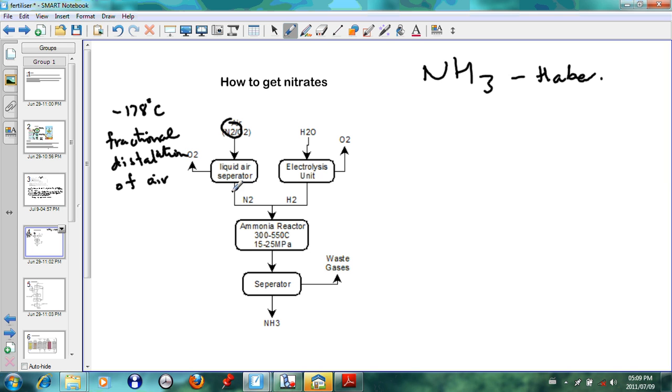The liquid oxygen is removed and then the liquid nitrogen is left, and the liquid nitrogen is taken down further. Then on the other side here we see by the electrolysis of water, hydrogen and oxygen are formed. The oxygen is removed and the hydrogen comes down into the ammonia reactor and the reaction that takes place here is nitrogen plus hydrogen to create